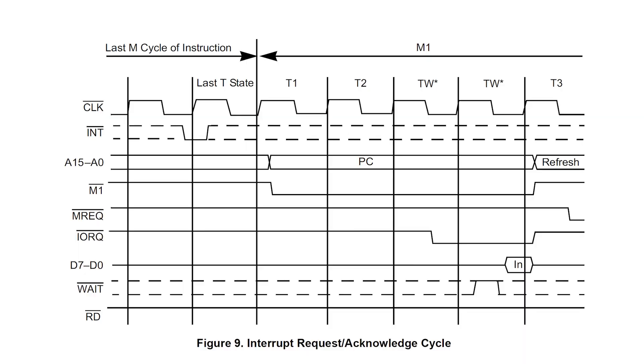This, it turns out, is actually part of the interrupt acknowledge cycle. We can see it here on the right-hand side of the diagram when both M1 and IO-REC are low. This is actually mainly used in interrupt mode 0, which we're not using, but it's still present in the current interrupt mode.